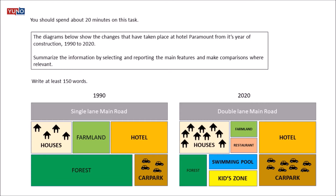Now let's discuss a sample map question. The instructions are always the same: you should spend about 20 minutes on this task and write at least 150 words. The statement says: 'The diagrams below show the changes that have taken place at Hotel Paramount from its year of construction 1990 to 2020. Summarize the information by selecting and reporting the main features and make comparisons where relevant.' The two maps here are of Hotel Paramount — one is of the year 1990 when the hotel was constructed and the other is of the current year, 2020.